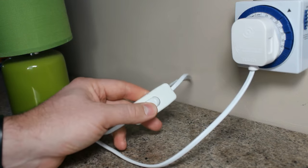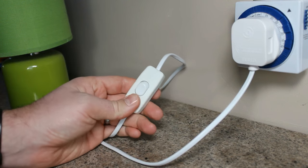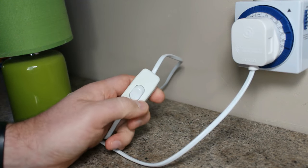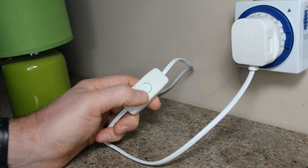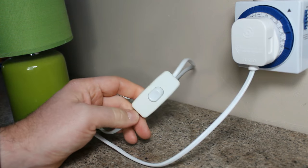One thing to make sure is if there's a switch on the appliance, whether that be a lamp, Christmas lights, a lamp for your fish, a lamp for your lizard, whatever it is, that that switch is turned on. Because if it's not, the timer switch is going to be useless.